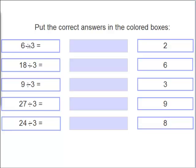6 divided by 3 equals what? Very good. 6 divided by 3 equals 2. And remember, 2 multiplied by 3 equals 6. So it goes both ways.